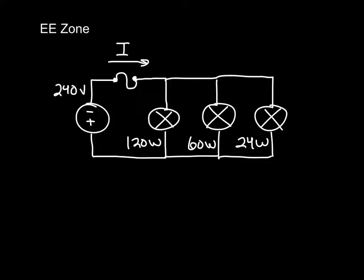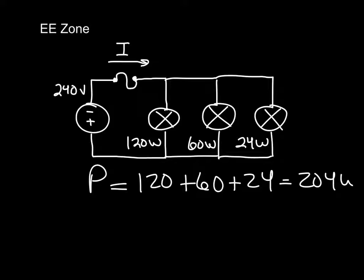Okay, so let's take it further. One of the things we need to understand is that the total power of the circuit is going to be the sum of the power in each branch. So this is going to be 120 plus 60 plus 24, or 204 watts.